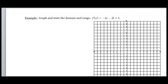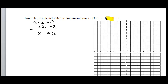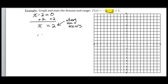Our first example says to graph and state the domain and range. The function is f of x equals negative absolute value of x minus 2 plus 1. The first step is to look inside the absolute value. I have the expression x minus 2. I want to know what value of x makes this equal to zero. Set it equal to zero: x minus 2 equals zero, add 2 to both sides, so x equals 2. This is where the V occurs.